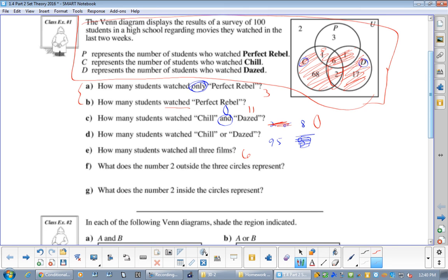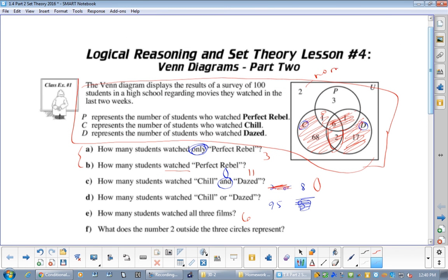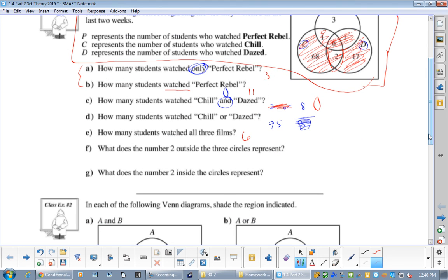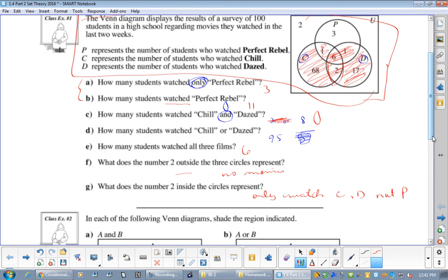These people - no movie, right? So, what does the two outside represent? No movies. What does the number two inside the circle represent? Only watched C and D. Not A. Not P.